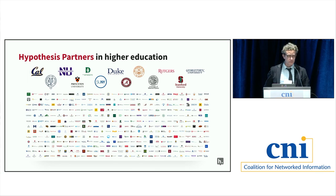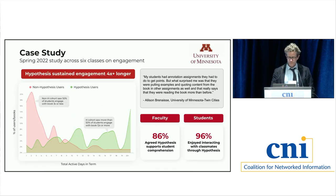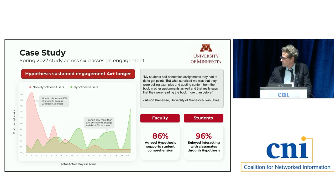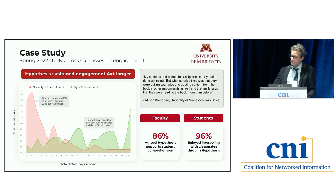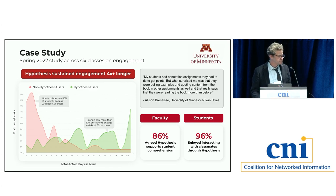Hypothesis now works with over 300 institutions of higher education, largely in North America. We largely work with digital learning offices and centers for teaching and learning, but I think there's a real opportunity for us to work more closely with those of you here who work out of libraries. I want to close by sharing the results of a study we conducted last spring at the University of Minnesota in a freshman composition course. This shows engagement data with course materials over the duration of a term. The red is from sections not using Hypothesis; the green is from courses using Hypothesis. Students using Hypothesis are more engaged with the content over time, accessing it more frequently. Every teacher and everyone involved in storing reading materials for courses would want to see this kind of sustained engagement with the content.